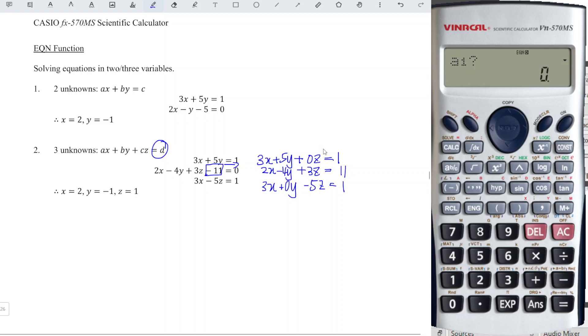Now we should input according to the equation that we've written here. So we have 3, 5, 0, 1. Second equation, 2, negative 4, positive 3, 11. Last equation, we have 3, 0, and minus 5. Constant is 1, and we press equal.